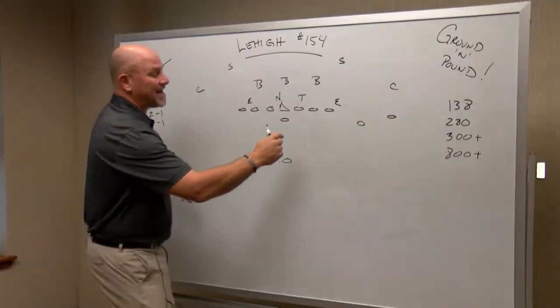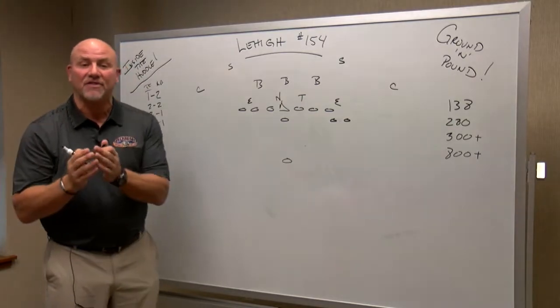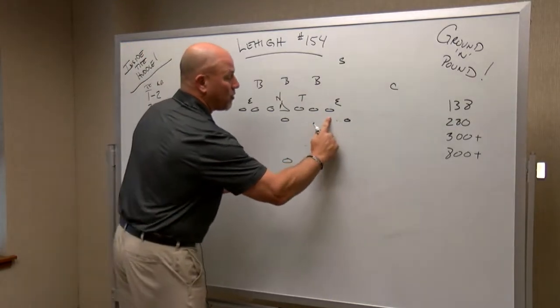And then also three tight ends. You've seen John do this as well. Three tight ends and one back in the backfield. Again, these are ways for Lafayette to ground and pound and run the football.